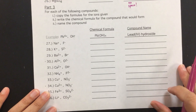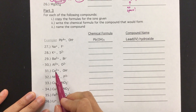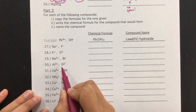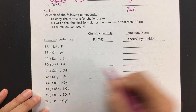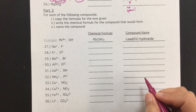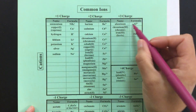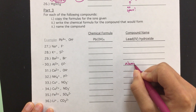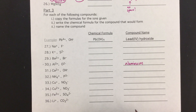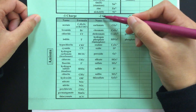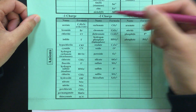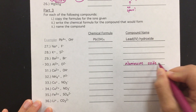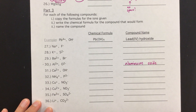On to part three, the final part. Now we are given the ion symbols and need to write a formula and name it. I'm going to start with Al³⁺ and NO₂⁻. It's actually easier to write the name first since we have those ions and need to look them up anyway. The cation is listed first with the positive charge. Al³⁺ is aluminum, so that's our cation name. Then O²⁻ — look in the anion section in the negative 2 area. There it is: O²⁻ is oxide. So the name is aluminum oxide. Now we still need to write the formula.